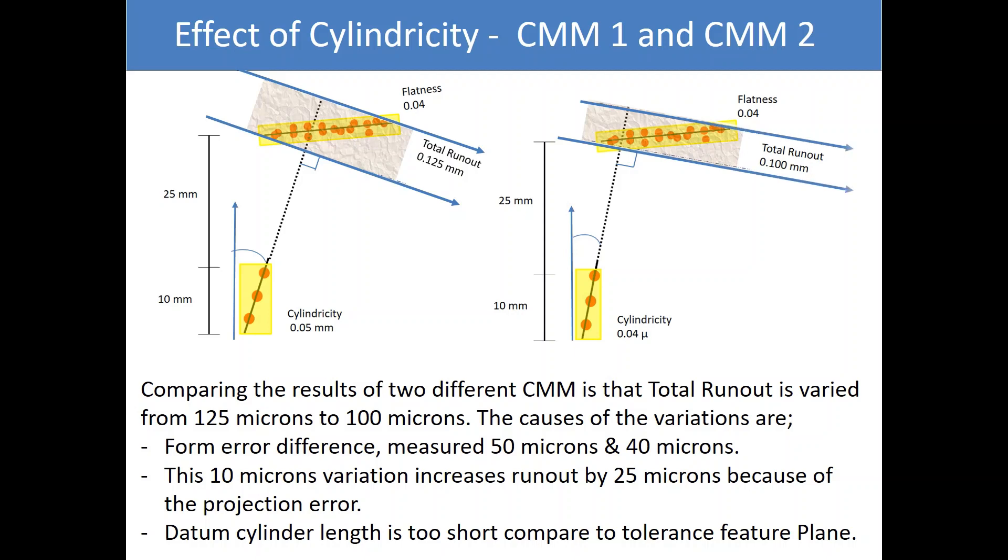The causes of the variations are: form error difference measured 50 microns and 40 microns. This 10 microns variation increases run out by 25 microns because of the projection error. Datum cylinder length is too short compared to tolerance feature plane.